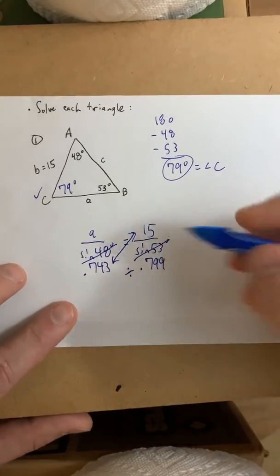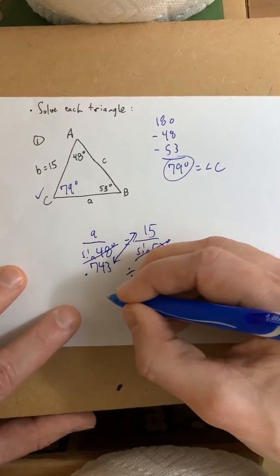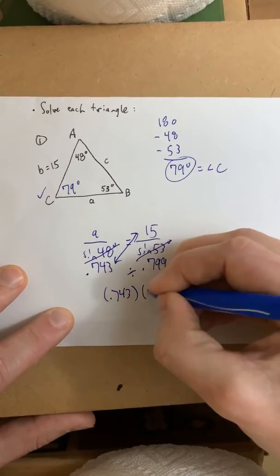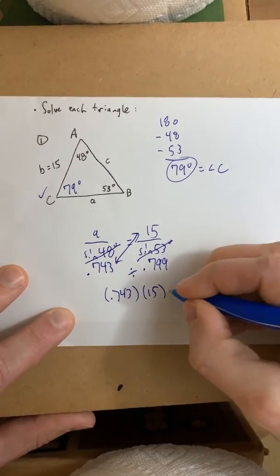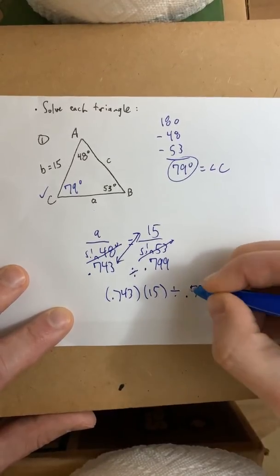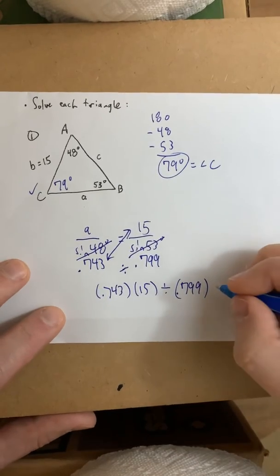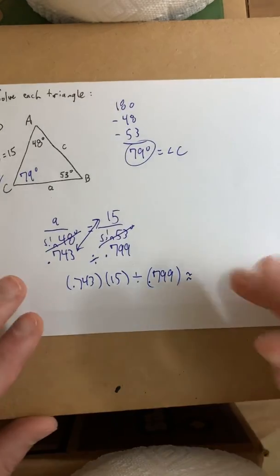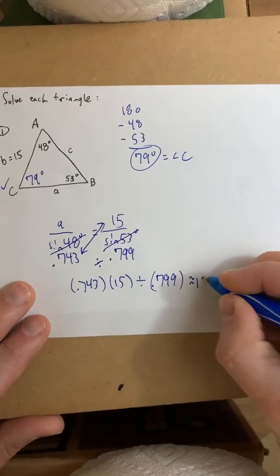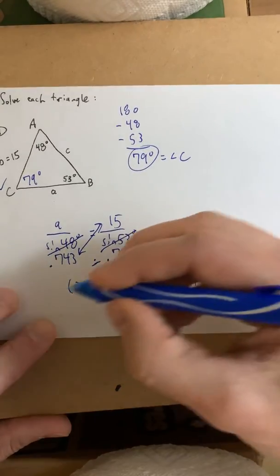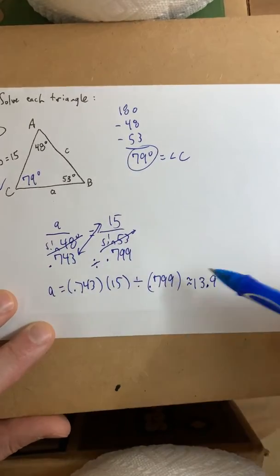And that will get you the length of side A. So, again, 0.743 times 15. Divide that result by 0.799. And at the very end, you can round the side to one decimal place, the nearest tenth. And that should get you 13.9 approximately for side A.